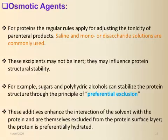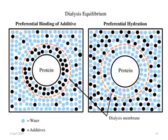Sugars and polyhydric alcohols can stabilize the protein structure through the principle of preferential exclusion, as illustrated in the following diagram.